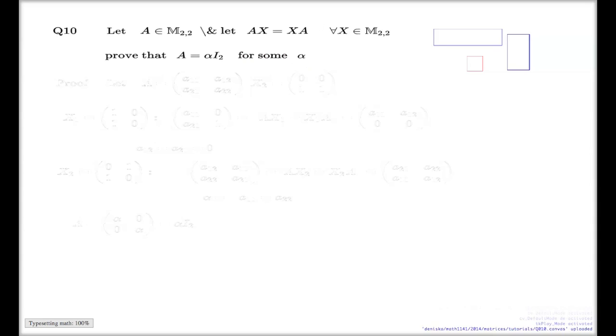But the problem itself is nice. So here's the statement of question 10. Again, we have a matrix which commutes with any other one. Our job is to prove that such a matrix is a scalar multiple of the identity. Let's just say my matrix A has these general entries: A11, A12, A21, A22.